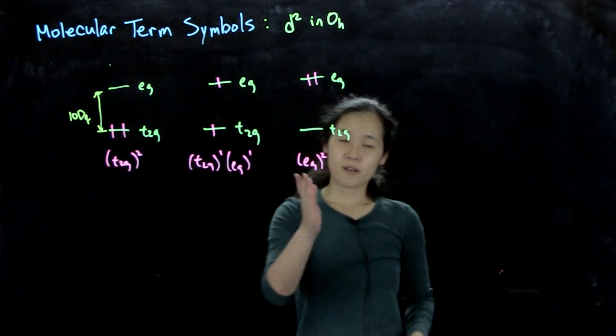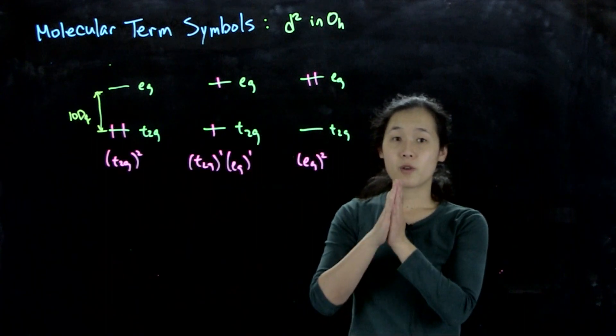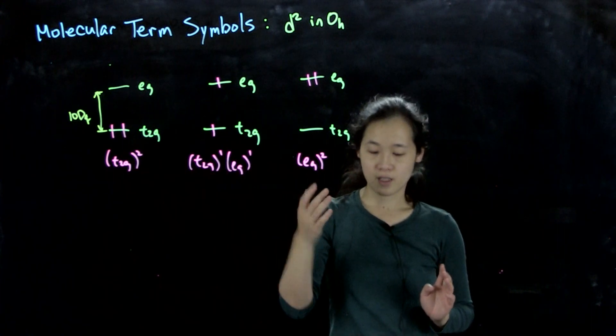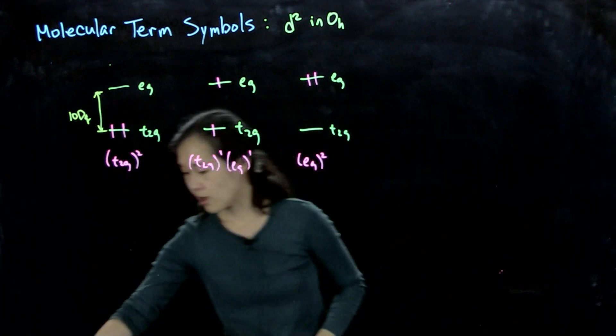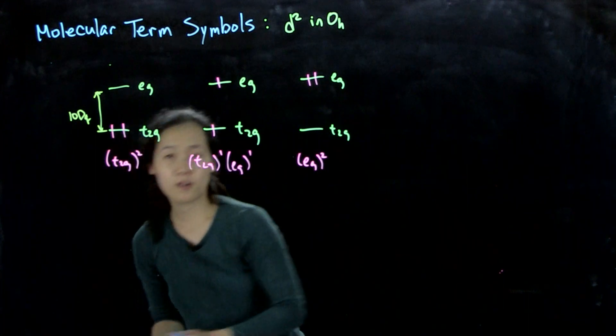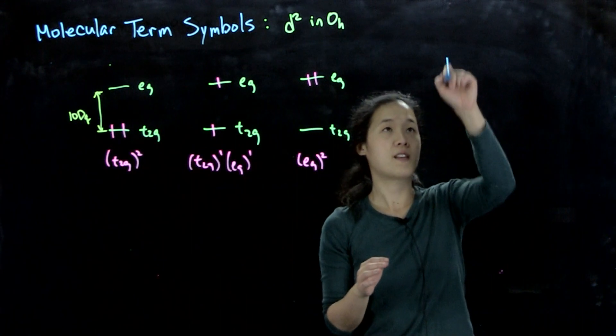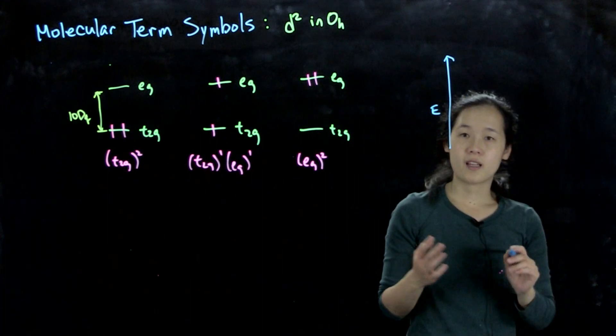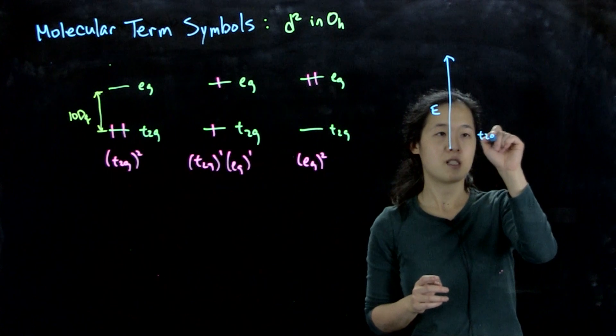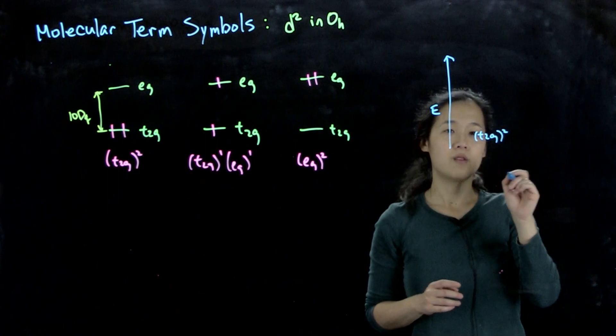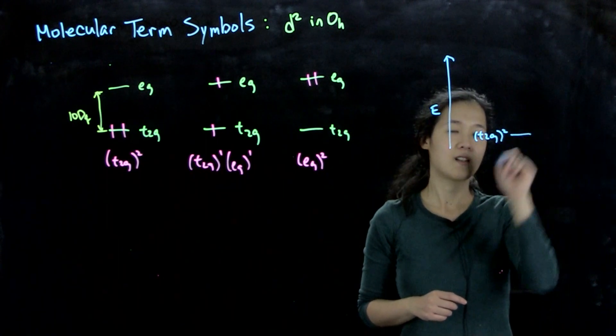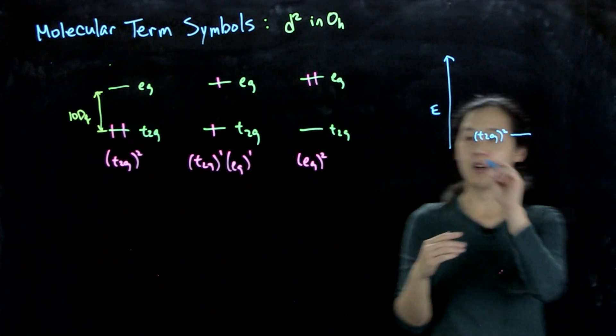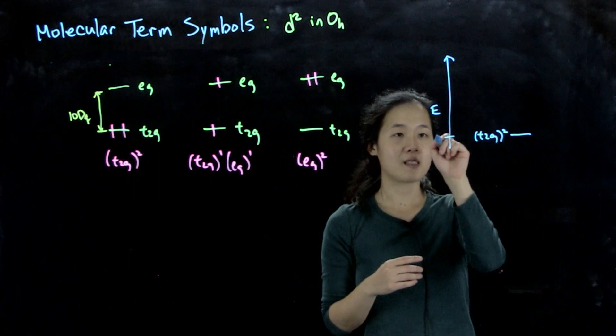So each of these configurations should have multiple terms or states that arise from electron-electron repulsion within these configurations. So if we were to just finally draw, when we make our final state picture, so if I have this as my energy axis, we know that for the configuration of t2g², let me put this as a line over here, terms arising from this, whether they split off or not from electron-electron repulsion, are going to be lowest energy. So let's call this arbitrarily zero.